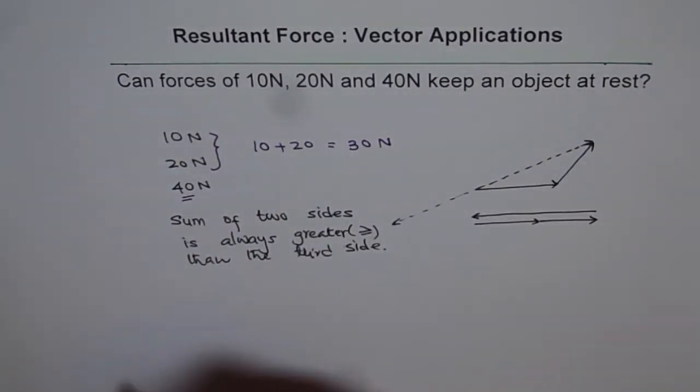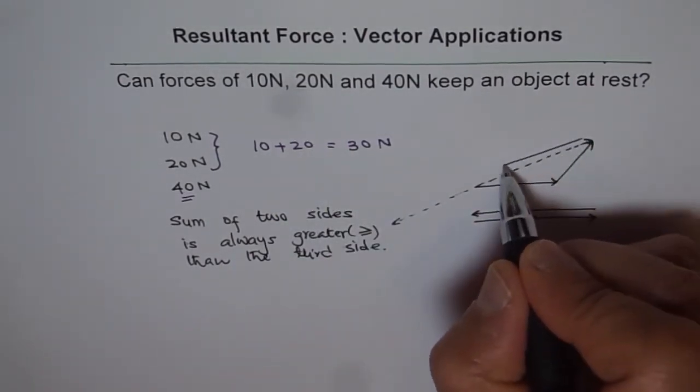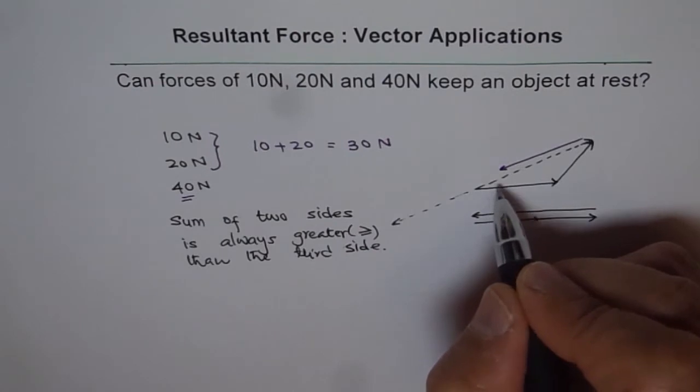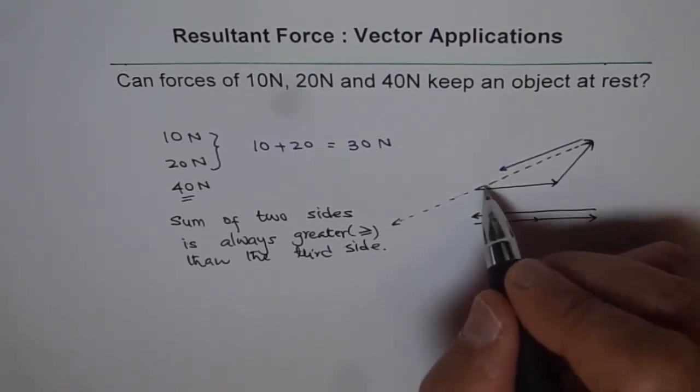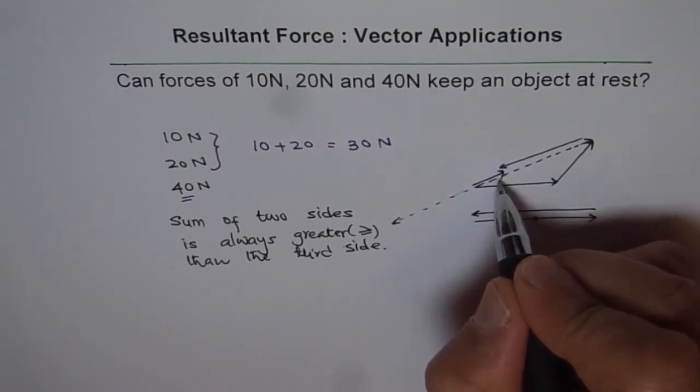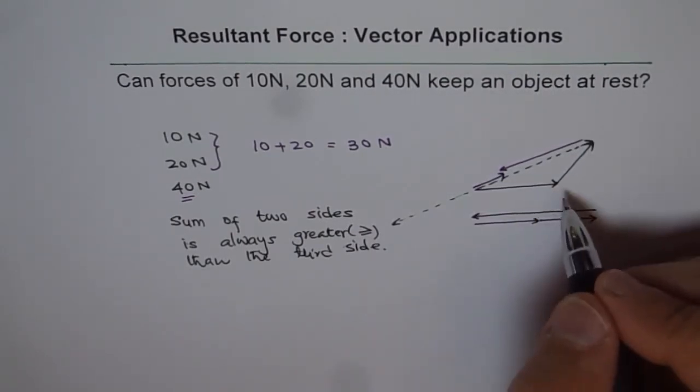which is smaller than 40N. And therefore, a triangle cannot be formed. So the third side will be actually shorter. So you will not be able to form a triangle. And as a result, the net force will be this much, pointing in this direction. So the system will not be at rest.